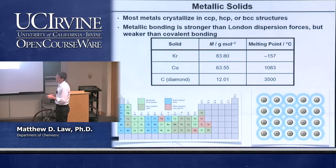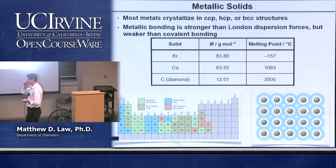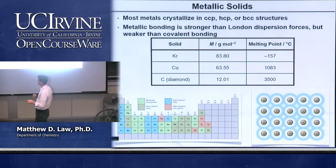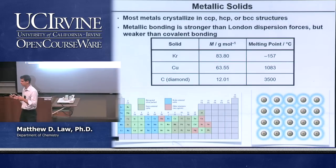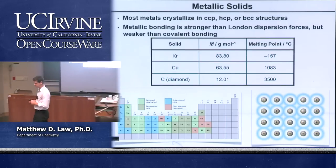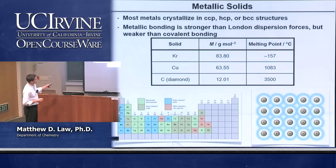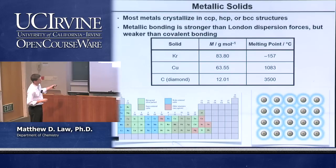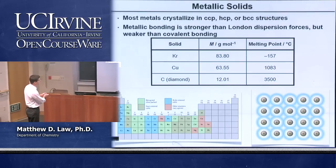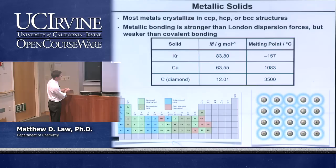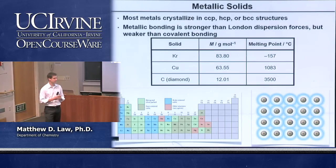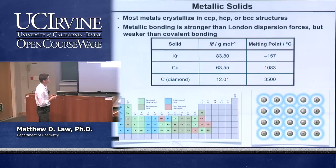In metallic solids — elemental metals, especially transition metals and main-group metals — structures very commonly adopt CCP, HCP, or BCC. A periodic table shows the distribution: green for HCP, darker green for FCC, and blue for BCC. These three structures are very commonly observed for simple elemental solids.